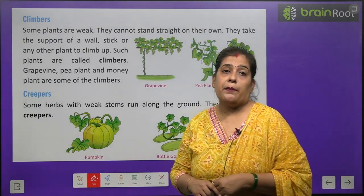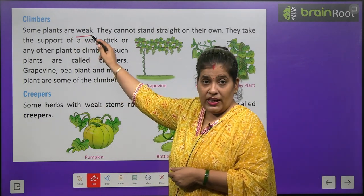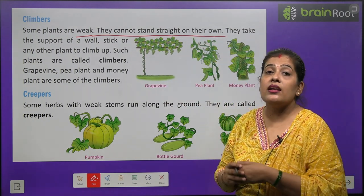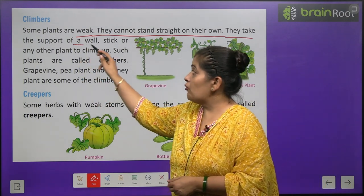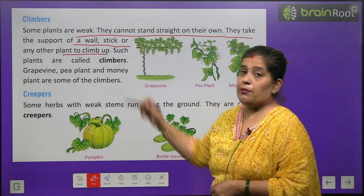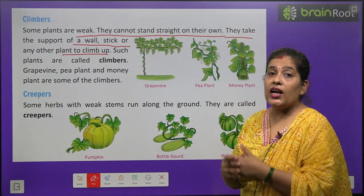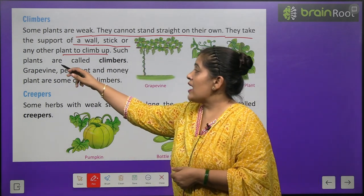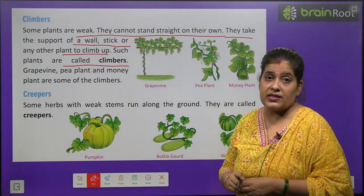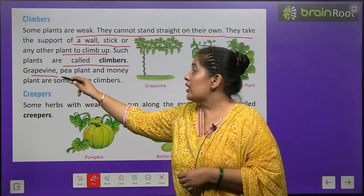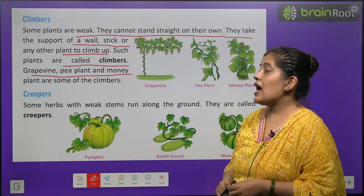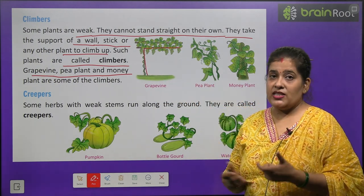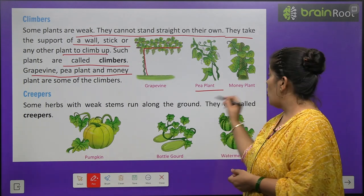Now we will learn about climbers. Some plants are weak — kuch plants kamzor hote hain. They cannot stand straight on their own. They take the support of a wall, stick, or any other plant to climb up. Such plants are called climbers — unhe hum climbers kehte hain. For example, grapevine — angoor ki bel — matar ka paudha, and money plant are some of the climbers. Angoor ki bel ko stick ki madad chahiye chadne ke liye.